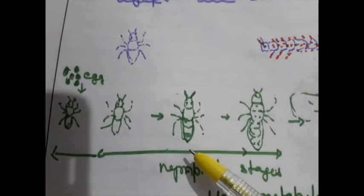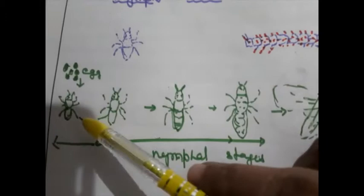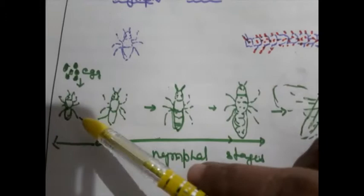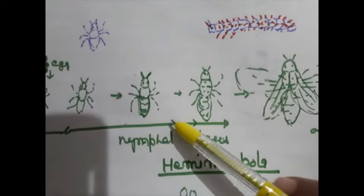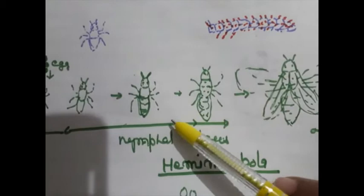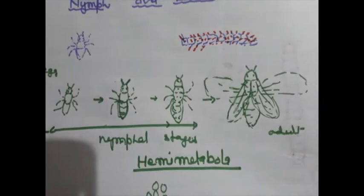The immature forms, nymphs, resemble the adult but are small in size, less pigmented, and lack wings and reproductive organs or system. During gradual development, wings and reproductive organs develop progressively, and immature stage is converted into adult.